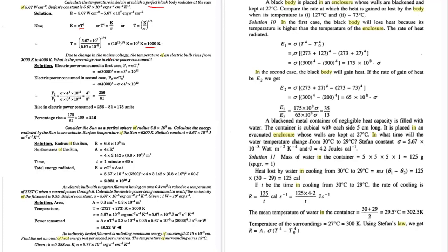Due to a change in the mains voltage, the temperature of an electric bulb rises from 3000 to 4000 Kelvin. What is the percentage rise in electrical power consumed? We know that power at the first condition, per area, equals Stefan's constant times T to the power 4.